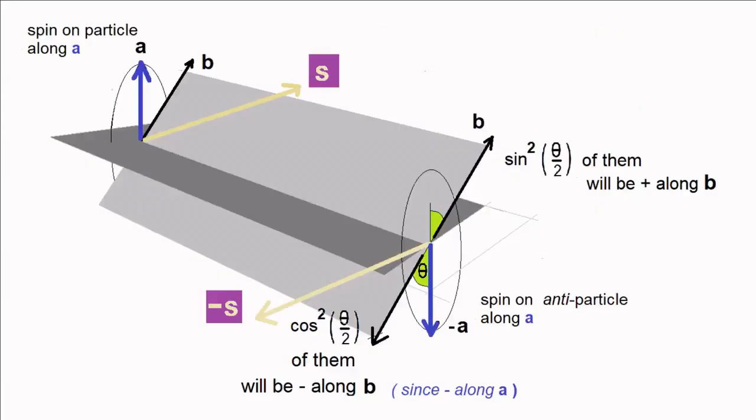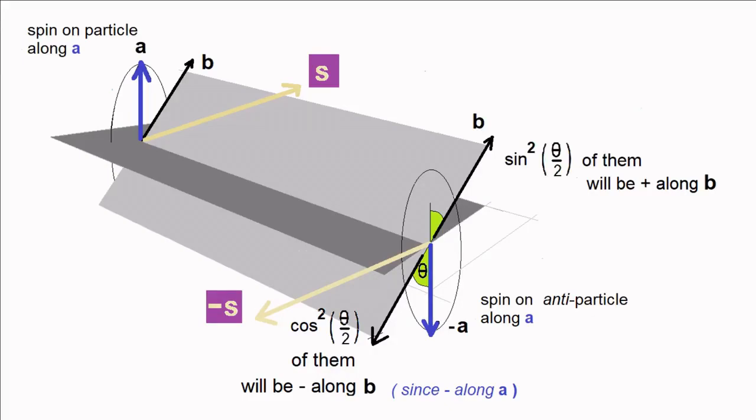But what does quantum mechanics say? Quantum mechanics says that if a spin is measured at an angle theta to its known direction, it will be found to be up along that theta direction cos squared theta over 2 of the time, and down along that theta direction sine squared theta over 2 of the time. See the video quantum spin and chiro-temporal correlation as to why this is the case.